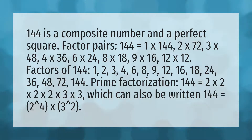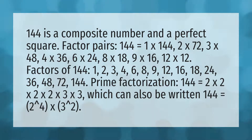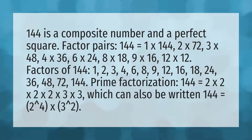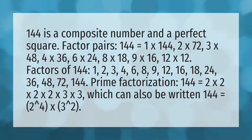Prime factorization: 144 equals 2 by 2 by 2 by 2 by 3 by 3, which can also be written as 144 equals 2 to the power of 4 times 3 to the power of 2.